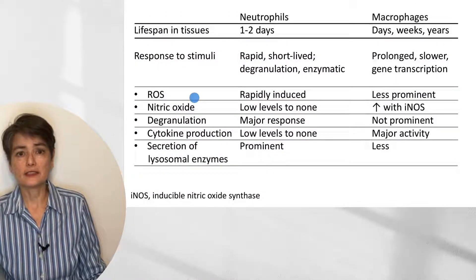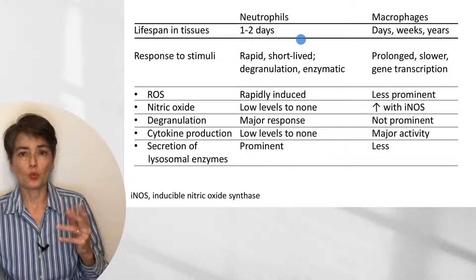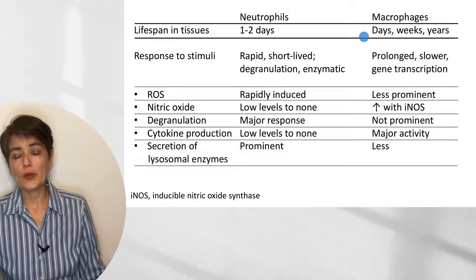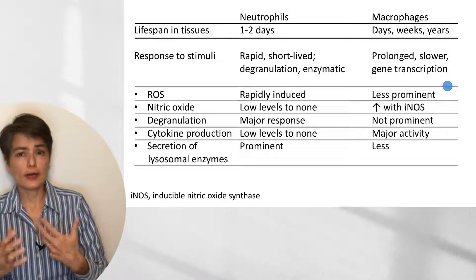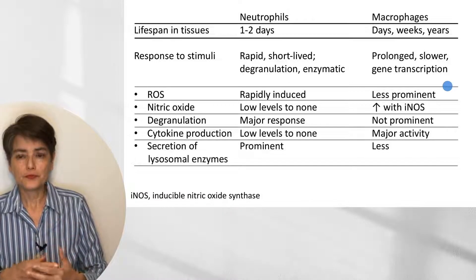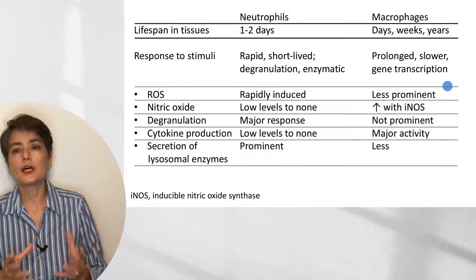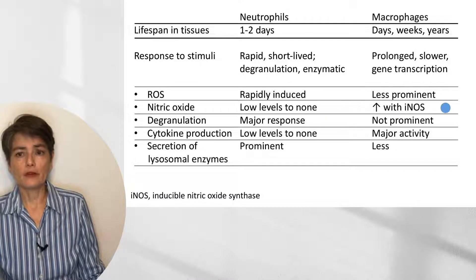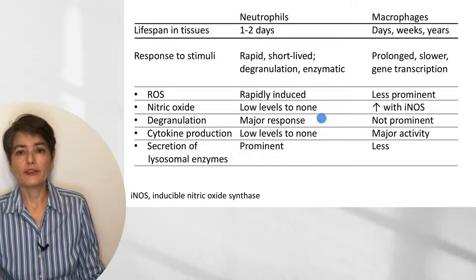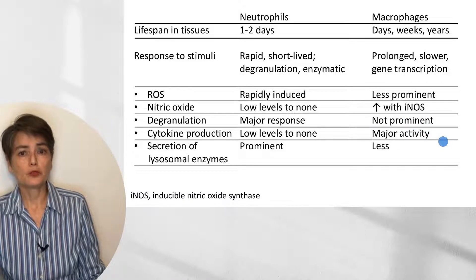Comparing neutrophils and macrophages: neutrophils have a lifespan of just one to two days; macrophages last days to weeks, and tissue macrophages may be there for years. Neutrophil response is rapid and short-lived, characterized by degranulation and enzyme digestion. Macrophages orchestrate the inflammatory response using gene transcription for a more modulated response. Reactive oxygen species are rapidly induced by neutrophils but have a smaller role in macrophages. Nitric oxide is primarily a macrophage mechanism. Degranulation and secretion of lysosomal enzymes are major neutrophil activities, while cytokines are the primary role of macrophages.